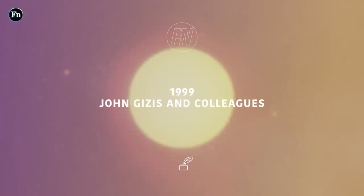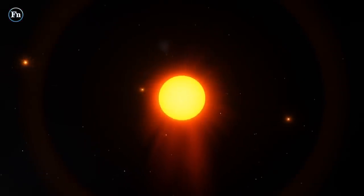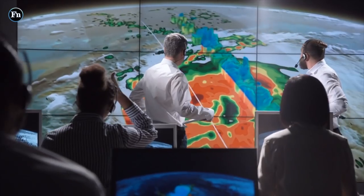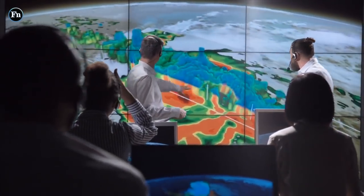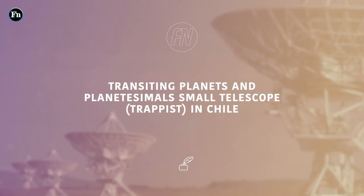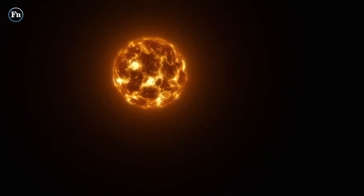The star we today call TRAPPIST-1 was initially discovered in 1999 by astronomer John Gizis and colleagues. Seventeen years later, scientists announced that they had discovered three planets around the star.